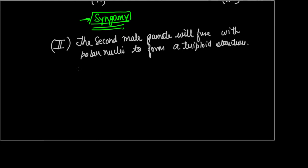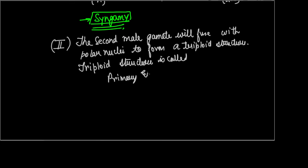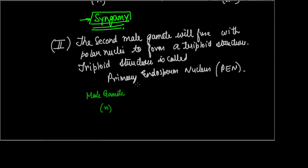This triploid structure is called the primary endosperm nucleus, or PEN for short. In equation form: male gamete (n) + polar nuclei (2n) → primary endosperm nucleus (3n).